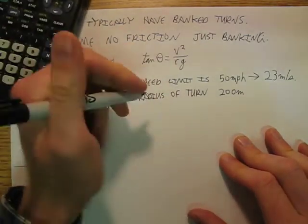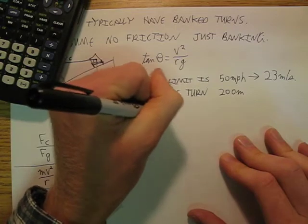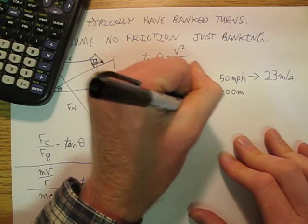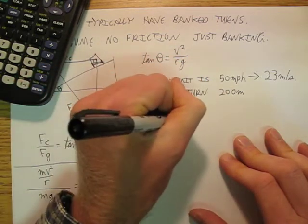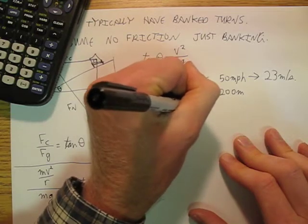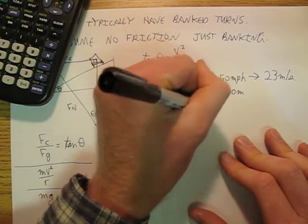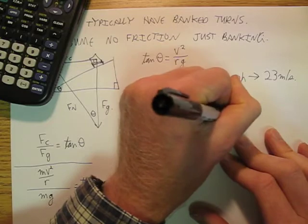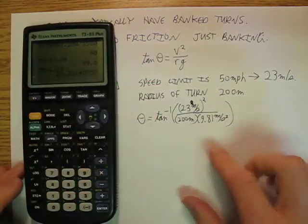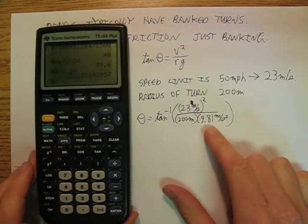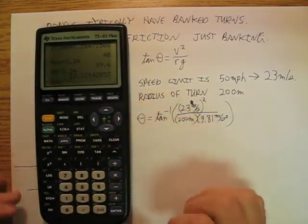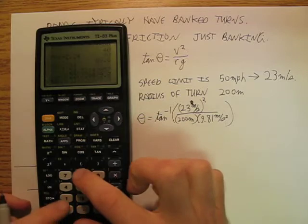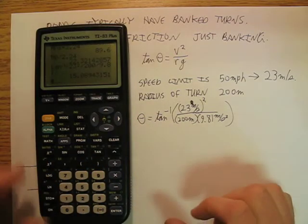And let's say the radius of turn that we want to achieve is going to be 200 meters. Well, that means that theta equals the tan inverse of 23 squared divided by 200 meters. I should put some units on that. 23 meters per second squared divided by 200 meters divided by 9.81. So I go shift tangent, 23 squared divided by 200 divided by 9.81. And then I'm going to end up with 15 degrees.